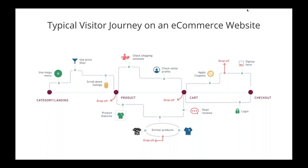Another thing the visitor journey sketch helps with is identifying areas of improvement. For example, when a visitor might be confused about making a purchase or selecting a product, reviews and native ratings act as a nudge to take the next step. Similarly, when a visitor is at the checkout page, something like a coupon code or free shipping acts as a nudge to move forward.